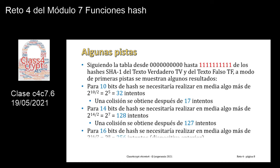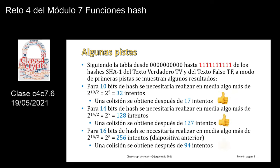Aquí tengo un pequeño ejemplo para ver que pareciera que se está cumpliendo la paradoja de cumpleaños. Si yo tuviese un hash de 10 bits, tendría que realizar en media algo más de 2 elevado a 10 medios, es decir 2 elevado a 5, igual a 32 intentos. Vais a ver que vais a obtener una colisión después de 17 intentos, bastante menos que esa media. Para 14 bits, tendría que hacer en media 2 elevado a 14 medios, 2 elevado a 7, que son 128; y vais a ver que se encuentra una colisión después de 127 intentos, prácticamente la media. Y para 16 bits, en media 2 elevado a 8, es decir 256, y hemos obtenido la colisión con 94 intentos. Pareciera que se está cumpliendo la condición.